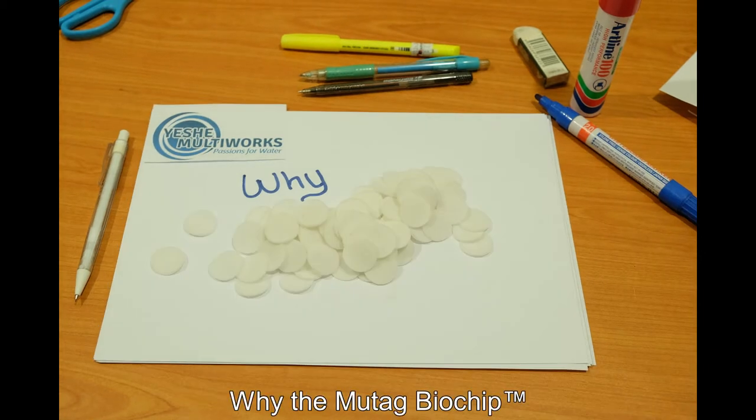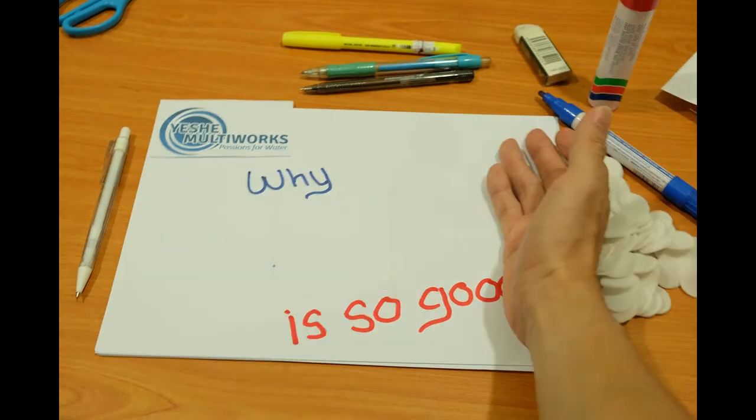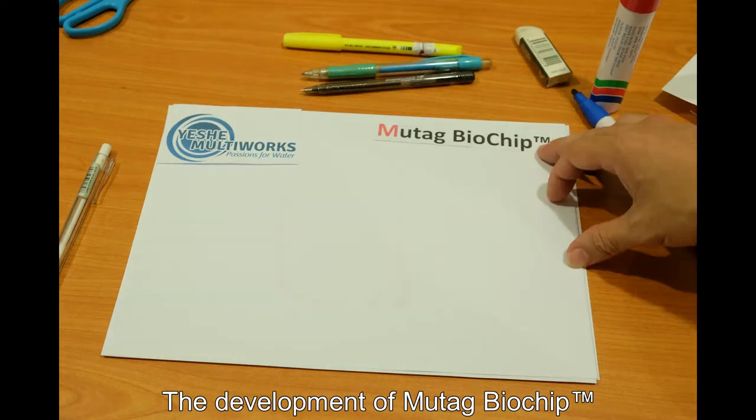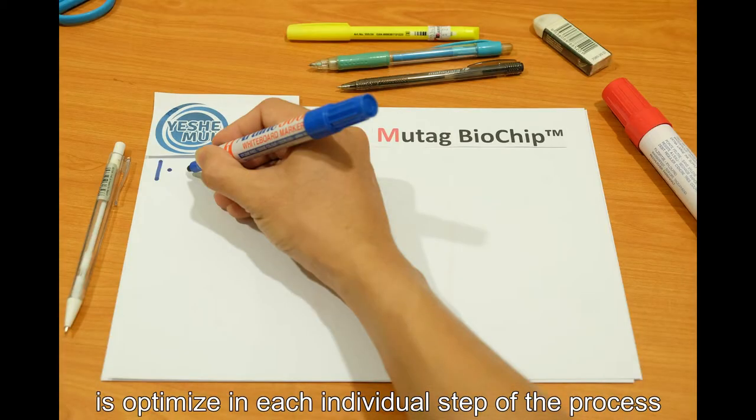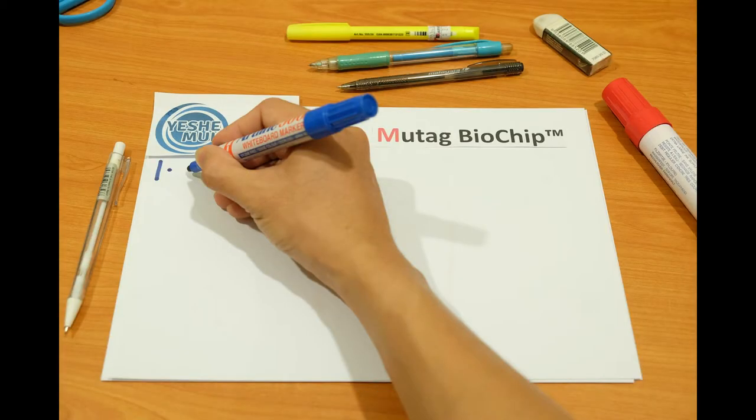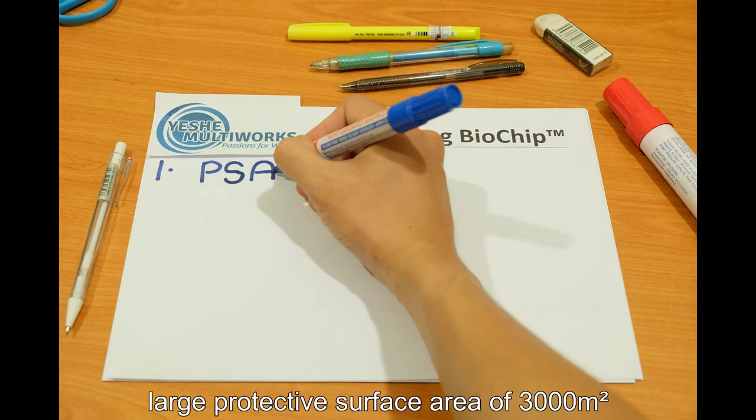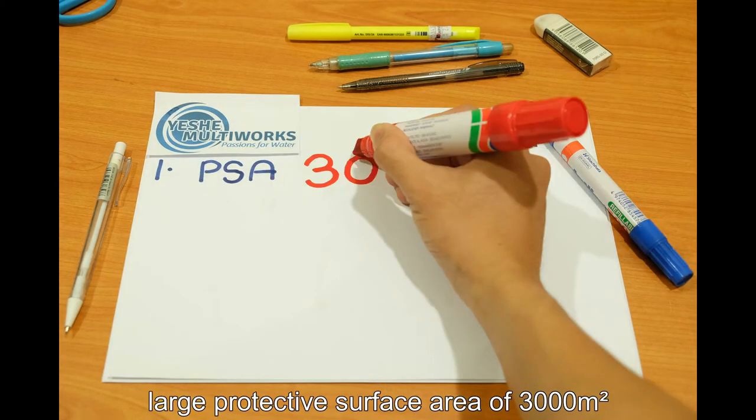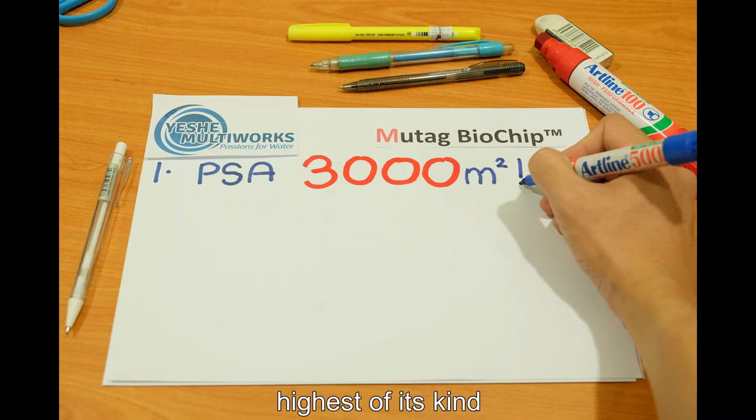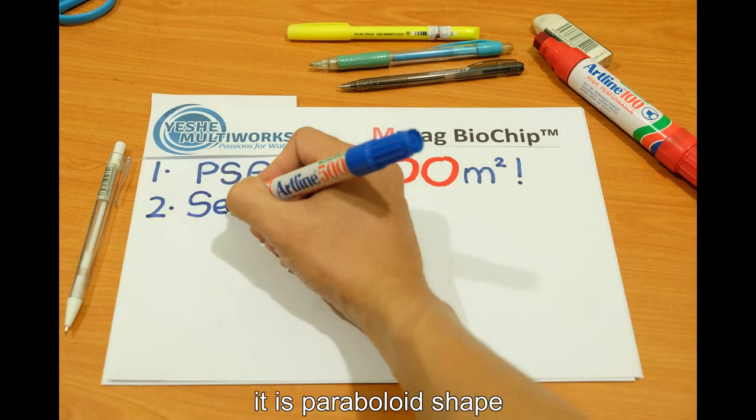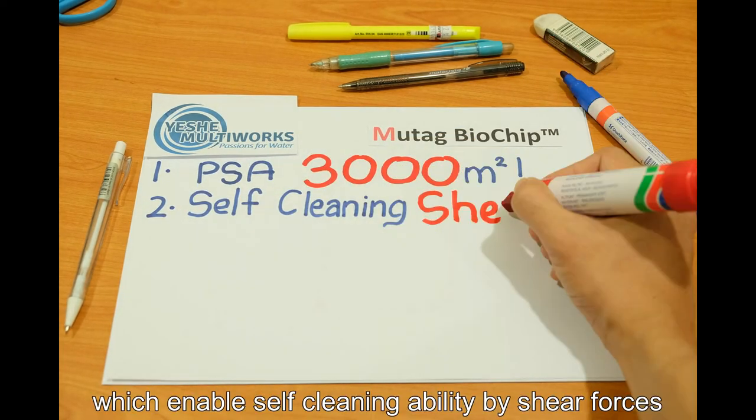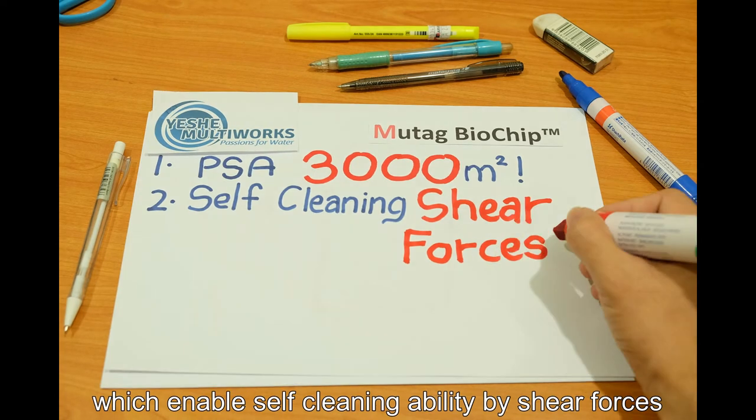Why is the Mutag biochip so good? The development of Mutag biochip is optimized in each individual step of the process. It has a remarkably large protective surface area of 3000 square meters, highest of its time. It is paraboloid in shape, which enables self-cleaning ability by shear forces.